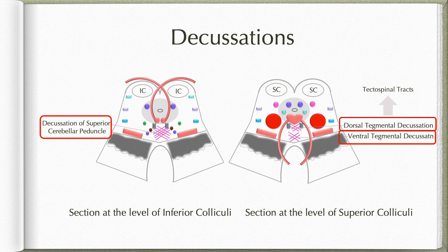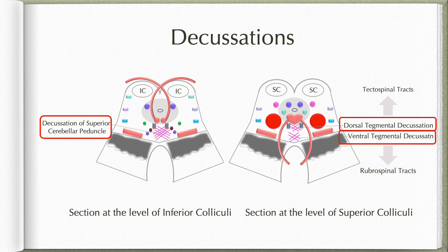This tectospinal tract is involved in turning the eyes and the head toward the source of pain. Coming to the ventral tegmental decussation: the fibers crossing here begin from the red nuclei. These fibers cross in the ventral tegmental decussation and project to the contralateral spinal cord as the rubrospinal tracts. Rubrospinal tracts in the brain stem are located in the lateral part of the tegmentum, and when they reach the spinal cord, they are located in the lateral funiculus just adjacent to the lateral corticospinal tract.